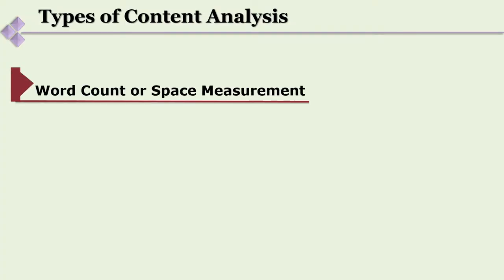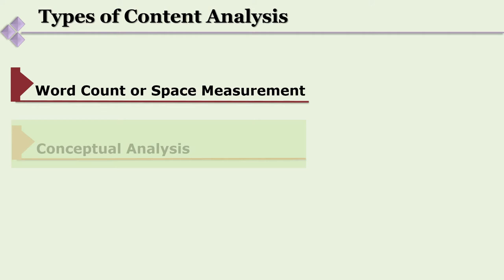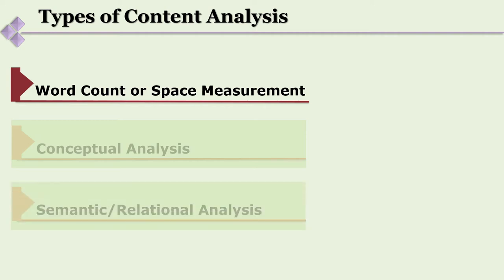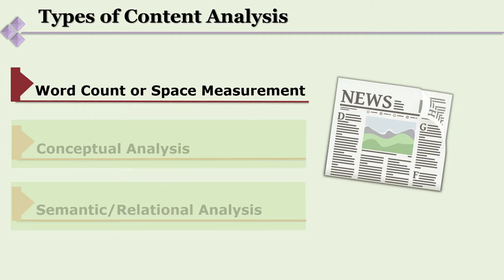There are various types of content analysis. The simplest and most common is word counting — for example, checking any piece of written text to see how many times 'male' versus 'female' has been written. This can reveal how a text gives more importance to one gender. For instance, we use 'cameraman' instead of 'cameraperson,' or 'chairman' instead of 'chairperson.' Content analysis can help us understand the way text is written — the simplest method being space measurement or word counting.